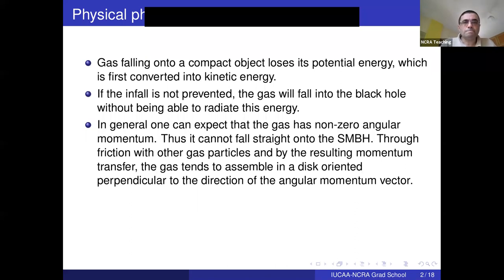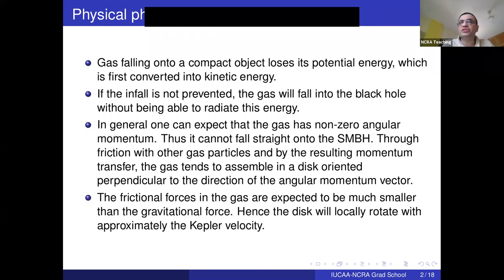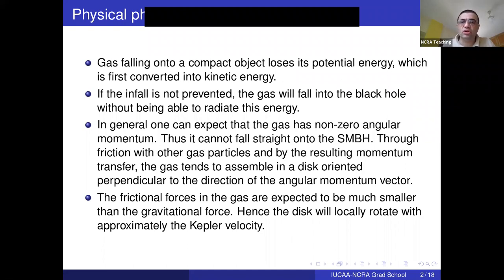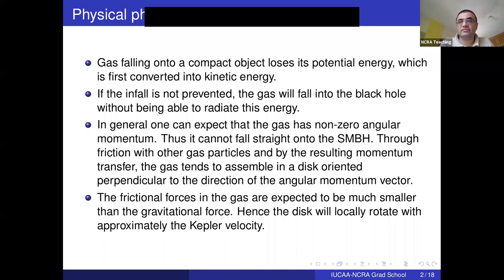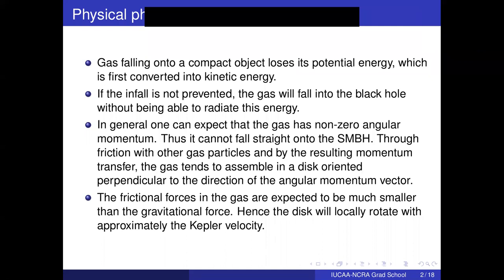Higher the angular momentum, the more geometrically thin will be the disk and the faster will be its rotation. We can assume that the frictional forces in the gas are much smaller than the gravitational force, so the motion will be almost like a free particle in orbit around the black hole. The disk will locally rotate with approximately the Keplerian velocity, and Kepler's laws tell us that the velocity decreases as 1 over root r as you go further from the source of gravity.